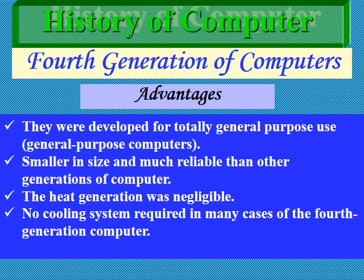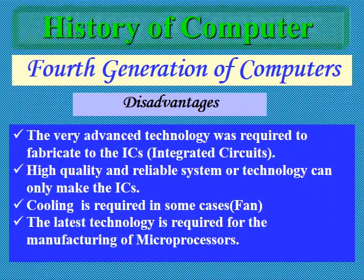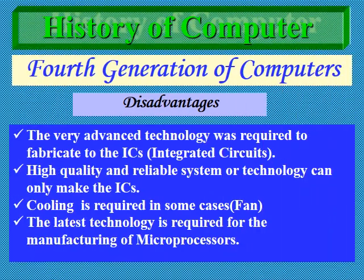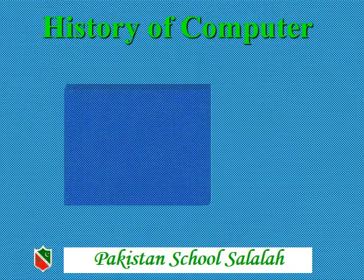In most cases, no cooling system is required in the fourth generation. The disadvantages are that very advanced technology is required to fabricate ICs, high quality and reliable system technology is needed to manufacture ICs, a cooling system is required in some cases, and the latest technology is required for manufacturing microprocessors.